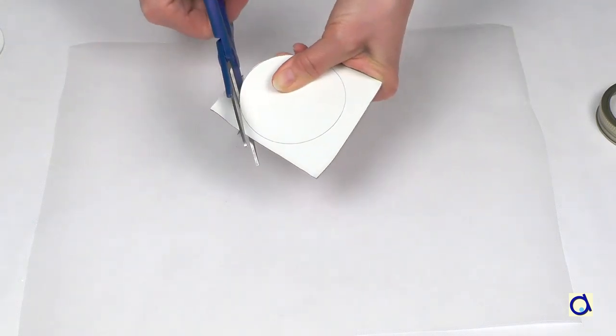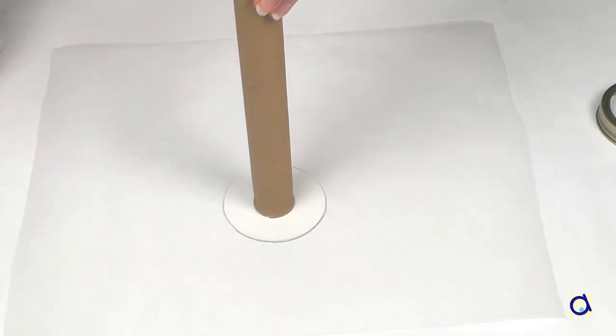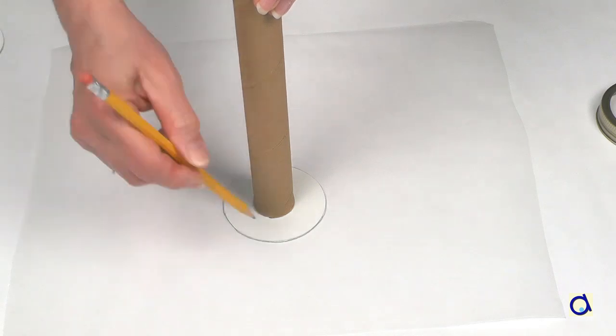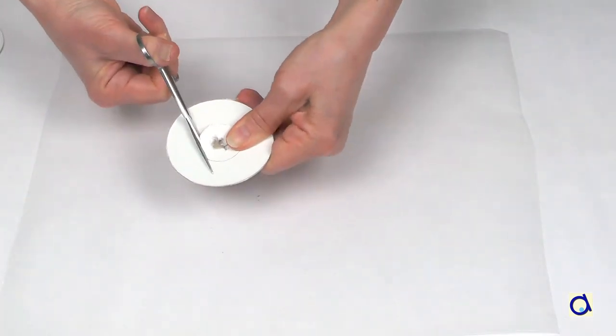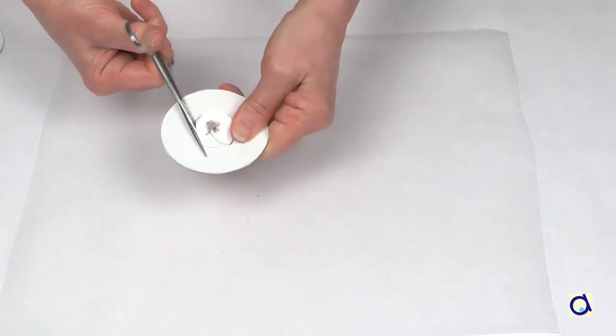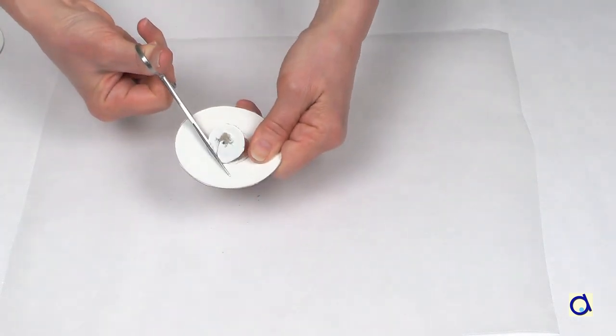Now place the tube in the center of the cardboard circle and trace the outline of the tube. Cut out the inside circle. The hole of the inside circle should be approximately the same size as the tube.